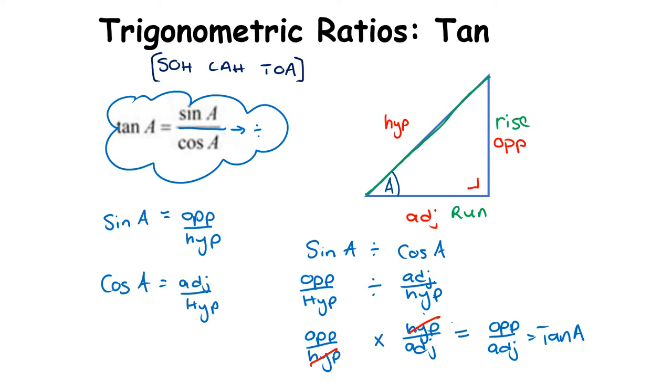When we talk about tan as sin over cos, the formula comes from our log tables page 13, and we've now worked through the proof.